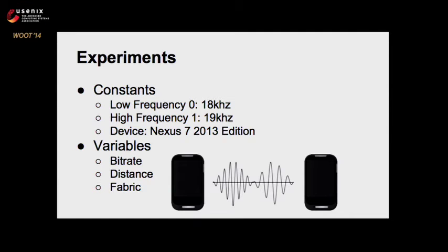For our experiments, we chose several constants and variables. The low frequency we chose was 18 kilohertz and the high frequency was 19 kilohertz — we didn't have any problems with these being close together. We wish we could have used an even higher frequency so children and animals wouldn't be a problem, but these are the frequencies used by several related papers. When we tried 20 kilohertz, our Nexus 7 devices couldn't produce the amplitude we needed. Android covers a huge range of devices — some might be better at this and some worse. We seemed to get results indicating an iPad was more promising than a Nexus 7, but we didn't have as many Apple devices. The variables we tested were bit rate, distance, and one experiment put our Nexus 7 tablet into the leg of some denim jeans, folded over — it was too big to fit in a pocket, but we got it in there.